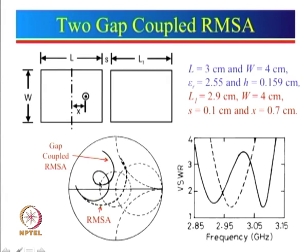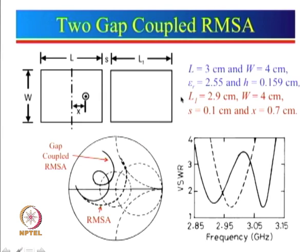We can see that there is a loop in the impedance plot. This loop is because of the resonance of the parasitic patch. The impedance is much lower compared to before. The reason is that the parasitic patch also radiates, so its radiation resistance appears in parallel. Since this patch length is approximately lambda by 2, the load resistance transforms to the same value at the input. The two radiation resistances in parallel give a lower impedance, and if impedance is reduced, the impedance variation will also reduce.